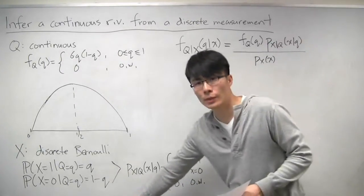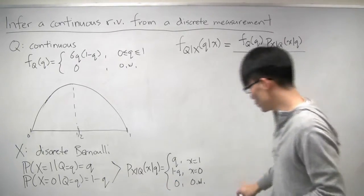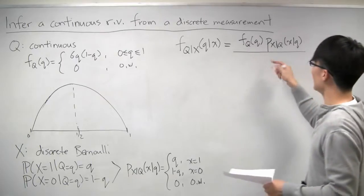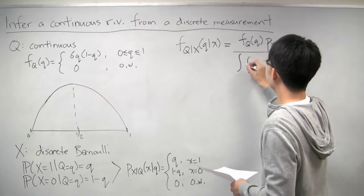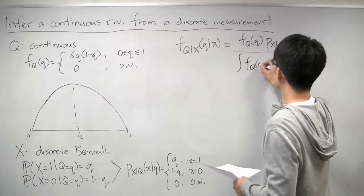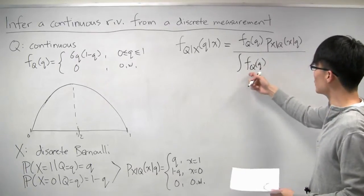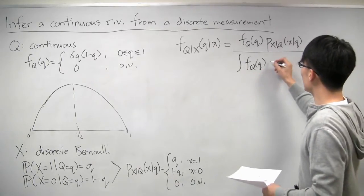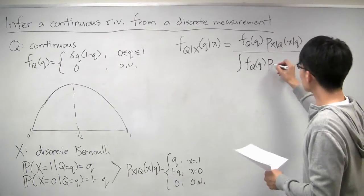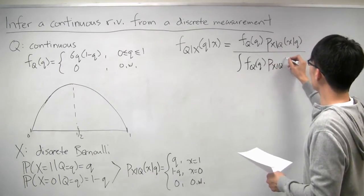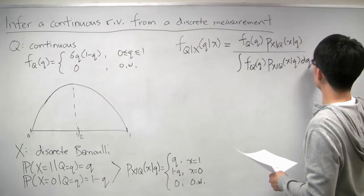And of course, we can take this PMF of x, this denominator, and expand it using the law of total probability. The PMF of x, you can think of it as you can get x with a combination of lots of different possible values of the bias q. And so we just calculate all of those possible possibilities and integrate.